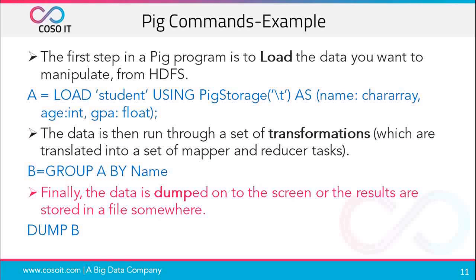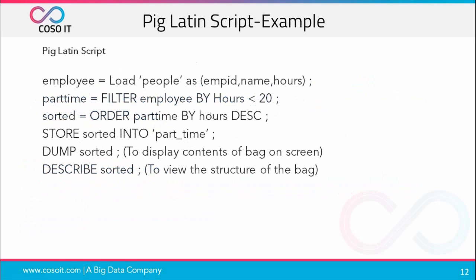In a Pig Latin script example, we have a people file with employee ID, name, and hours fields. We load this data into a variable employee, then filter it by hours less than 20 into a variable part_time. After that we sort it using an SQL-like statement: order part_time by hours in descending order. Finally, we store the sorted data into another file, or dump it to display on the screen. The describe command is used to view the structure of the bag.